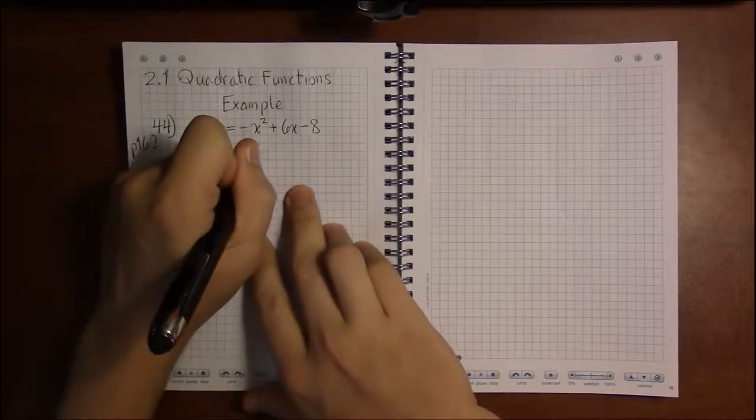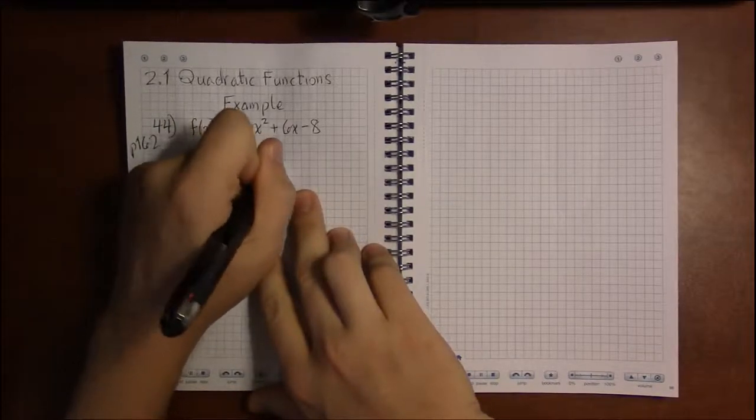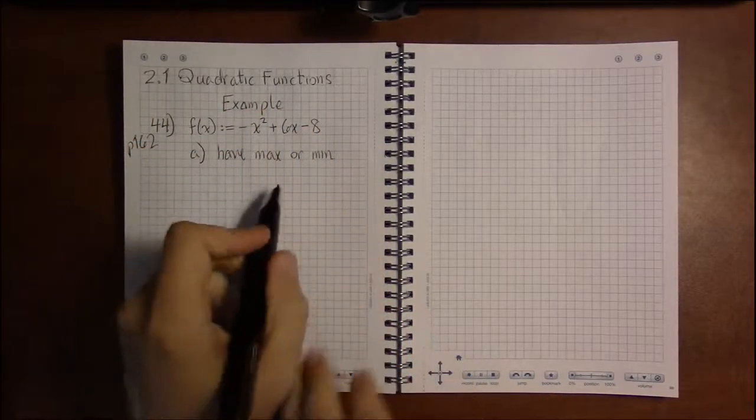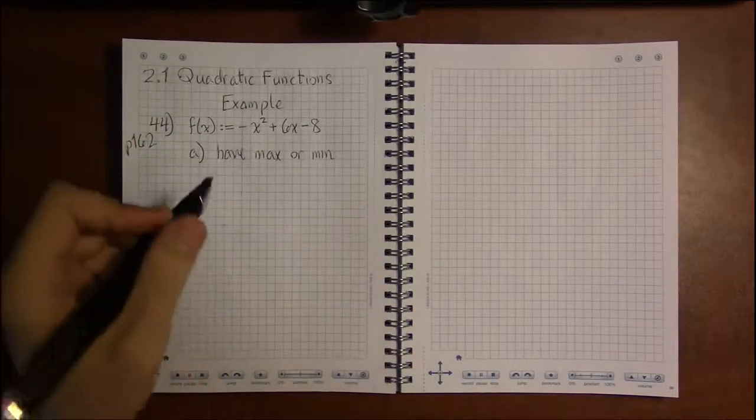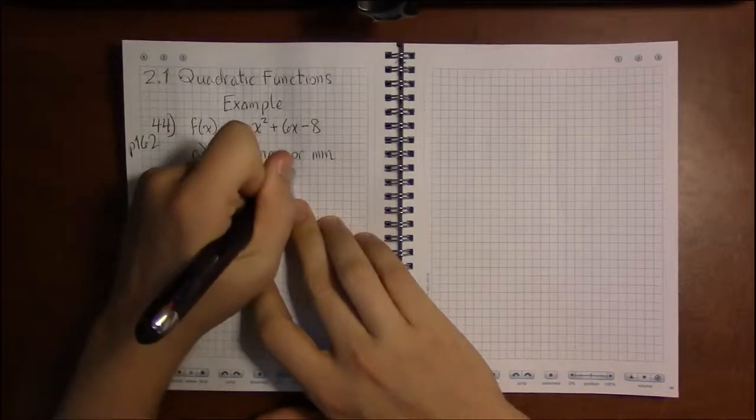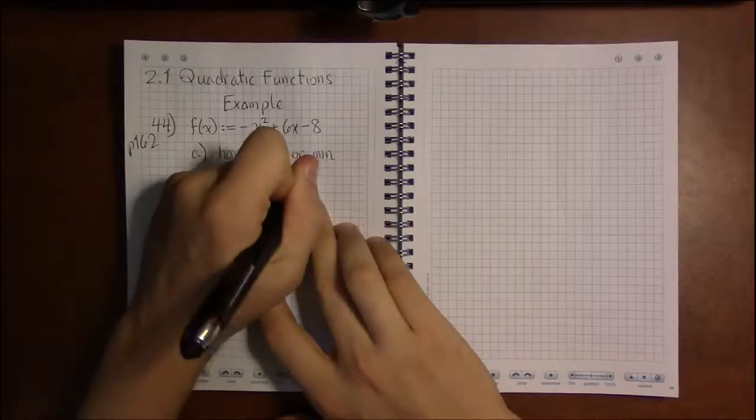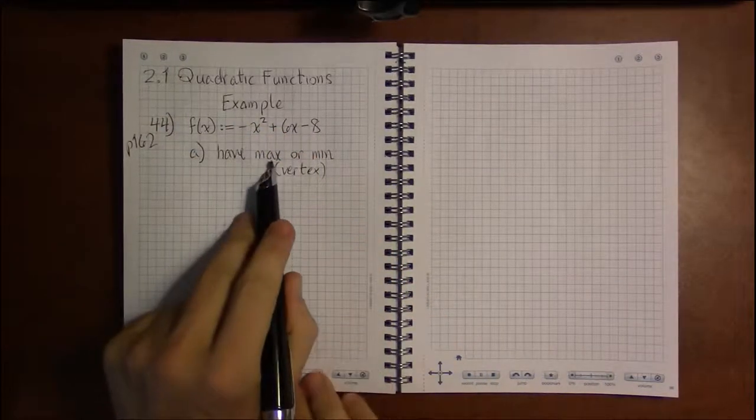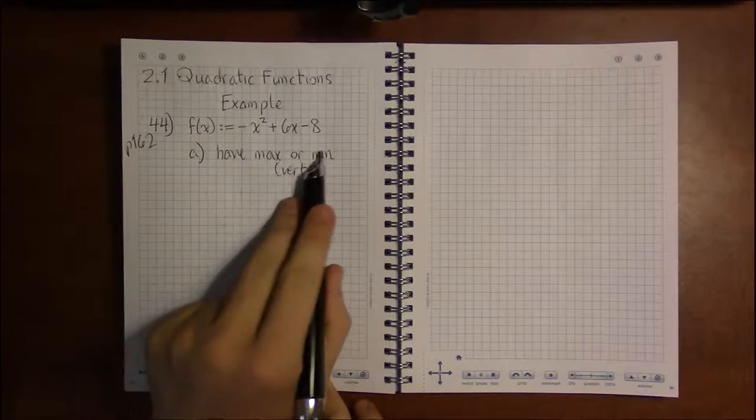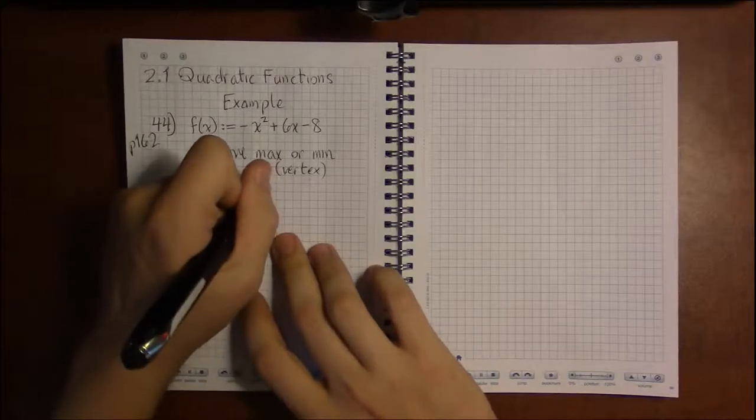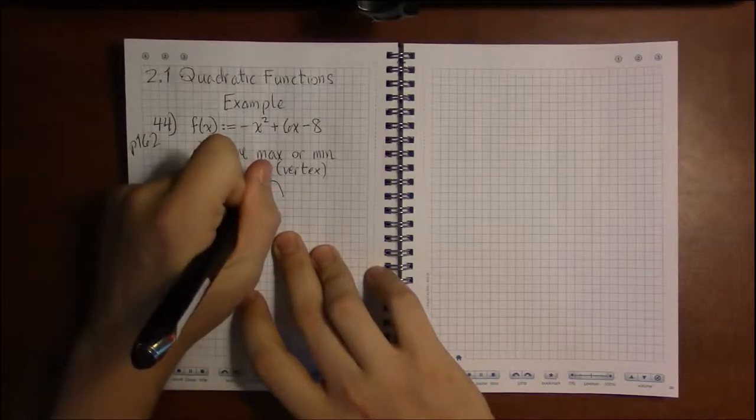Now remember, for a parabola the max or min is going to be the vertex. Regardless of whether the vertex is a max or a min, it's going to have one of the two, not both. We call that the vertex. To have a max, the vertex has to be at the top of the parabola, so the parabola has to open down.